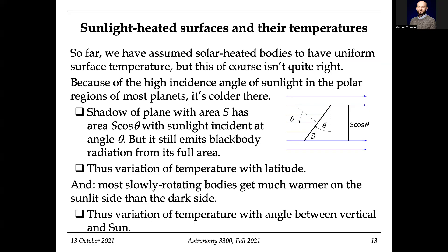Let's talk more about how you heat something — we're really going to think about the process of light. We've assumed uniform surface temperature, and that's probably not right. If you have a sphere, you are not going to heat it up the same way at all points. We know this because we are going through temperature changes on Earth — folks at the poles don't get as warm as folks at the equator. So let's figure out why sunlight gets absorbed differently at different parts of the sphere.